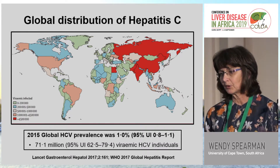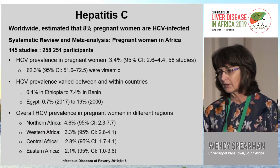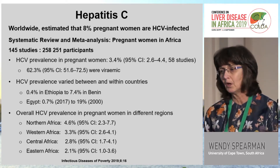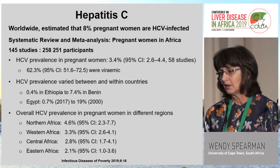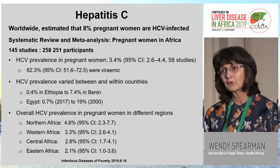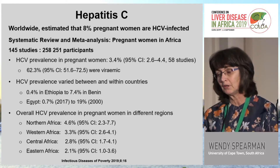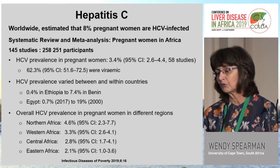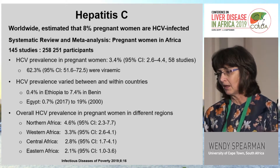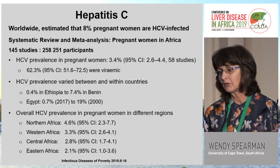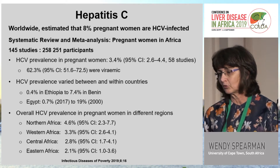Moving on to hepatitis C: the global prevalence is approximately 1%, with about 71 million in sub-Saharan Africa being infected. Worldwide, approximately 8% of pregnant women are hepatitis C infected. A similar systematic review of pregnant women in Africa showed a prevalence of 3.4%, with 62% of antibody-positive women being viremic. Prevalence varied from 0.4% in Ethiopia to 7.4% in Benin, with studies in Egypt ranging from 0.7% in 2017 to 19% in a later study. The highest regional prevalence was in North Africa at 4.6% and lowest in Eastern Africa at 2.1%.